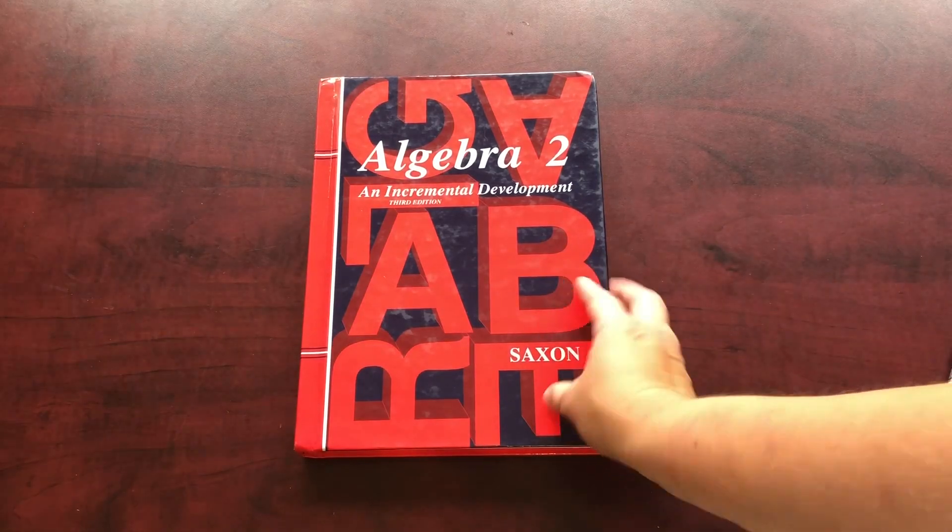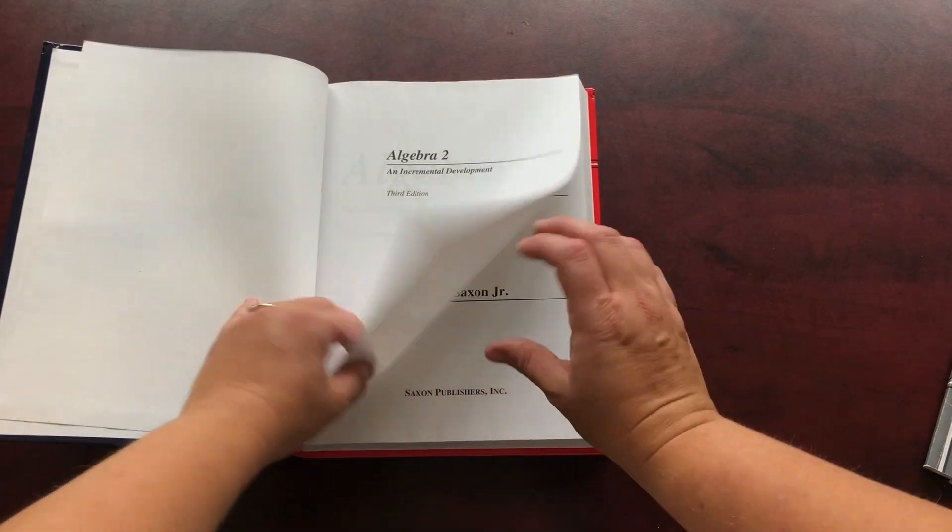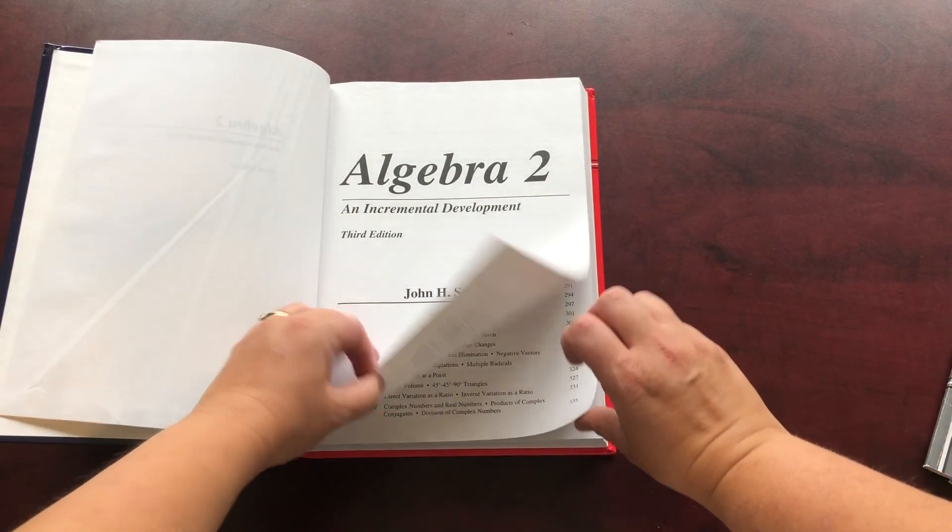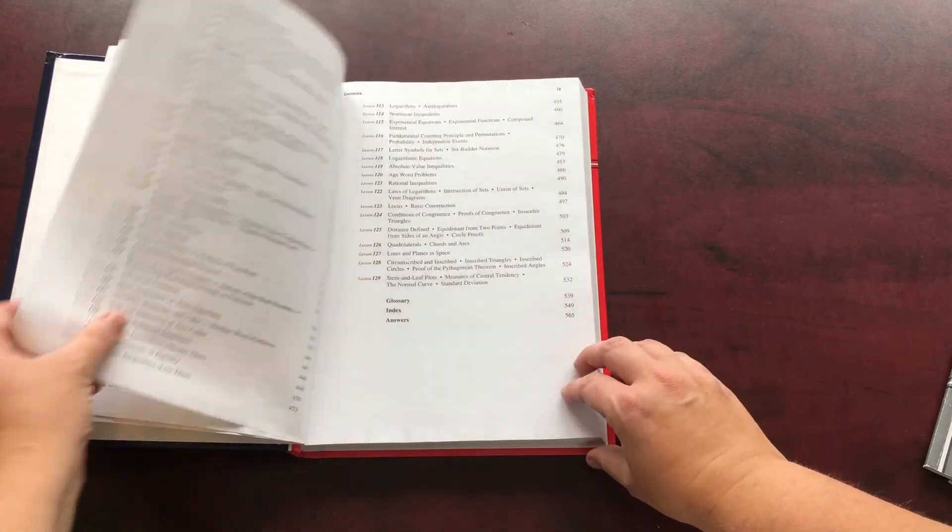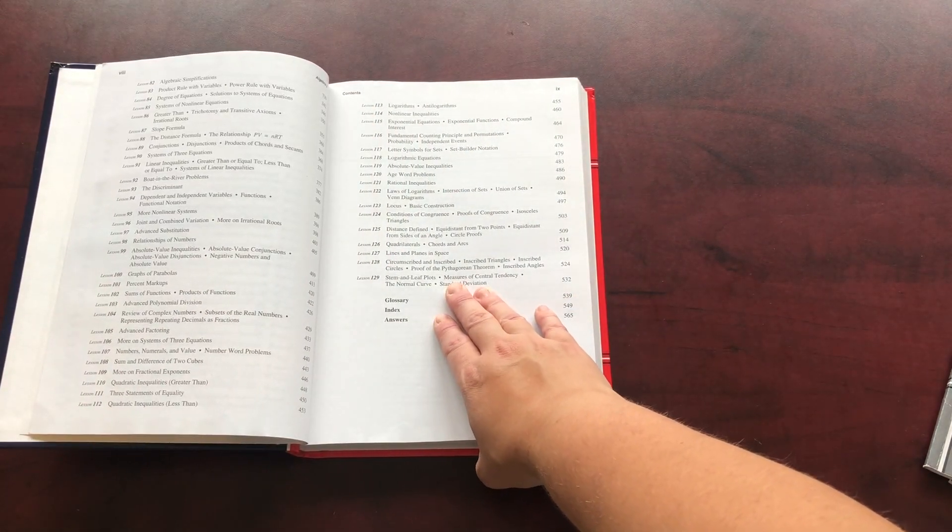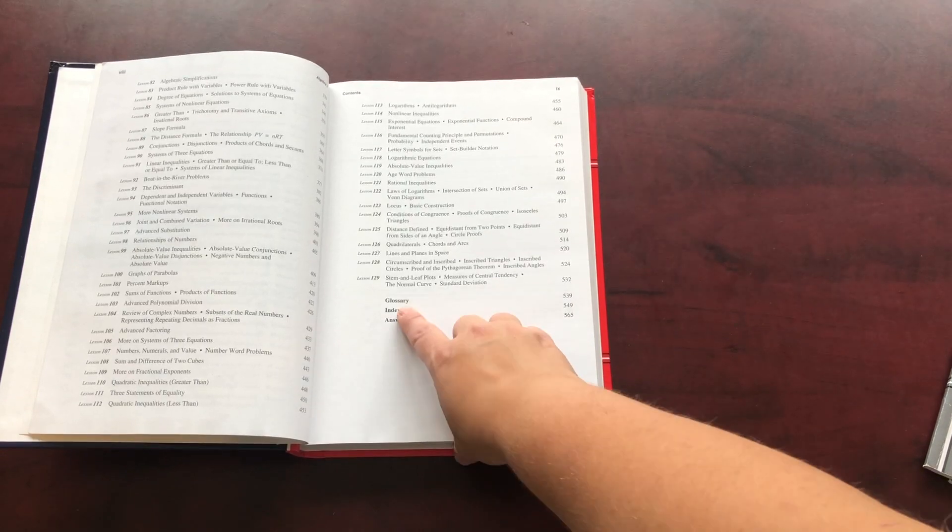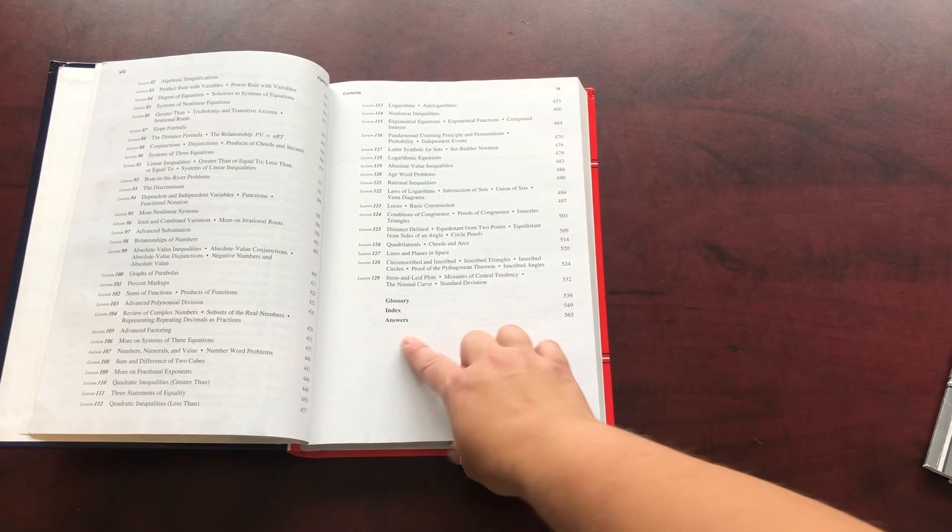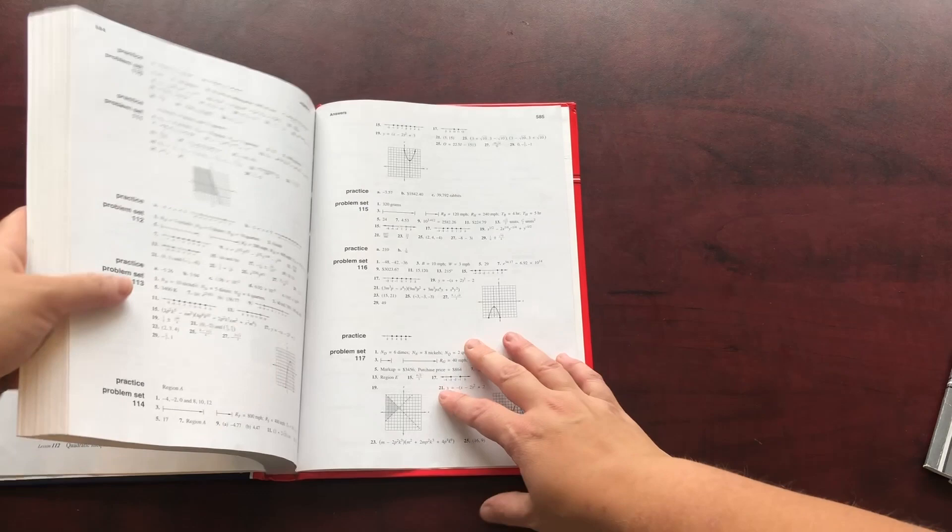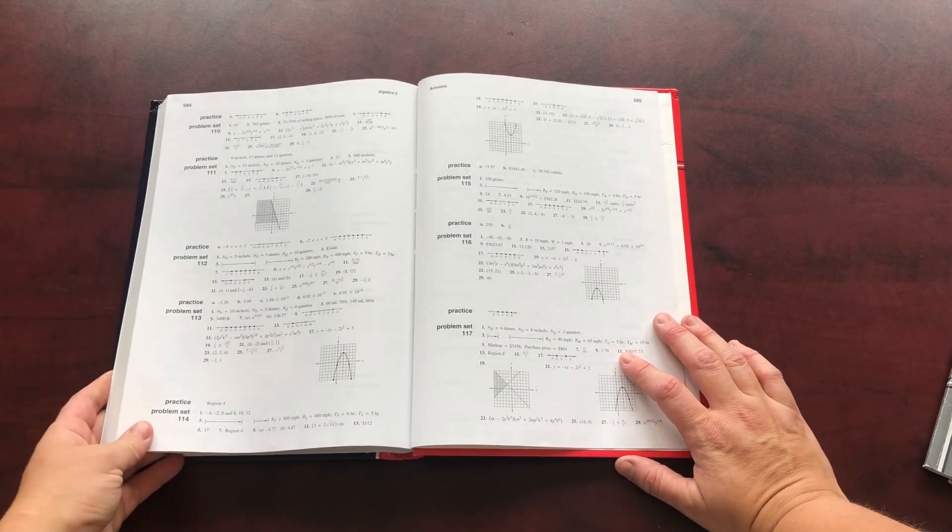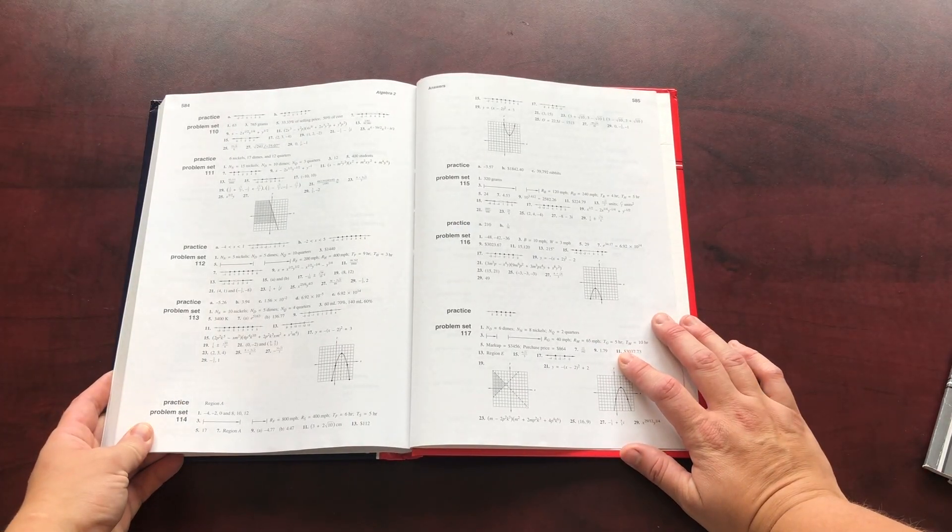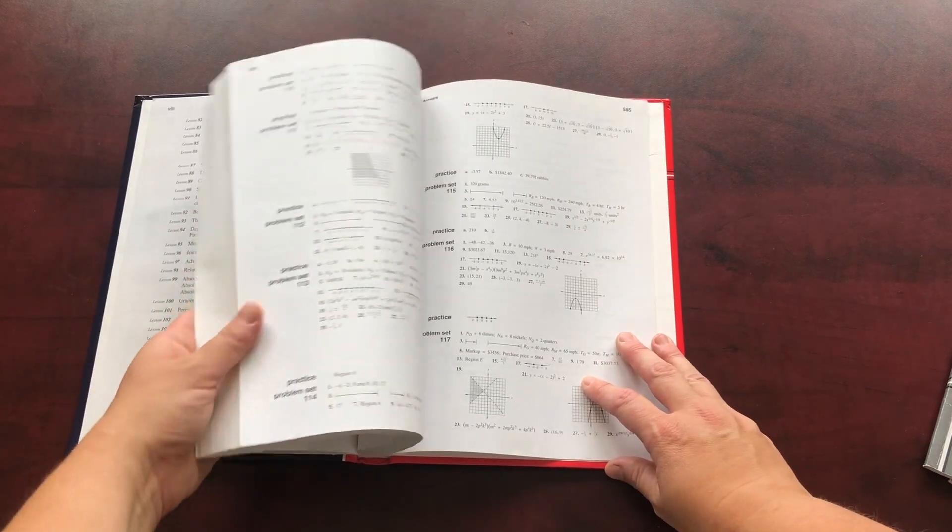So this is the child's textbook they're going to be using. And when we look here at the table of contents, there are 129 lessons, there are no extra topics, and then there's the glossary index and the answers. So if you see the answers here, again, it is just the odd questions that have the answers in the back.